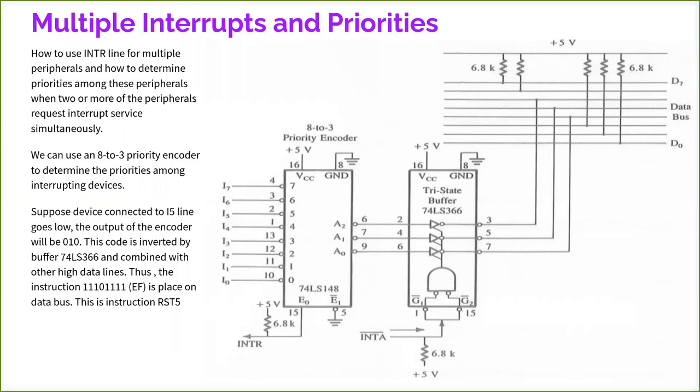How to use INTR line? Definitely there is only one INTR line. How it will service all the interrupts? Yes, we can do it with an 8-to-3 priority encoder. So when it is 8-to-3 encoder, up to 8 devices can interrupt at a time and selecting the priority is also based on some order. It uses an 8-to-3 priority encoder to determine the priorities among the interrupting devices.